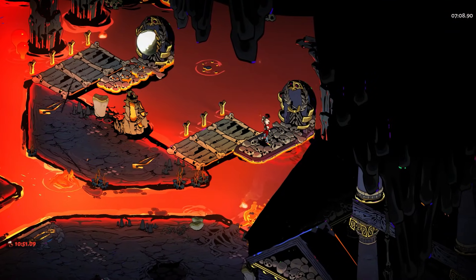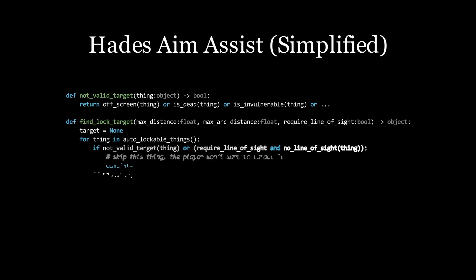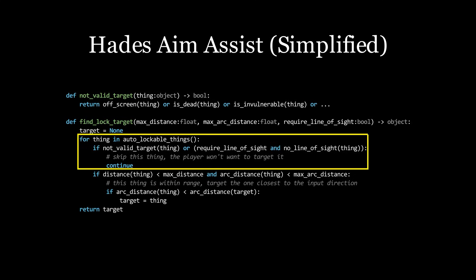In this context, aiming is often secondary to hitting, and so the aim assist in Hades appears to have been designed to ask the question, what are the targets that the player might want to hit in this context, and which one is closest to the player's aim direction. In theory, this ensures that any target the game selects will always make incremental progress to clearing the room.